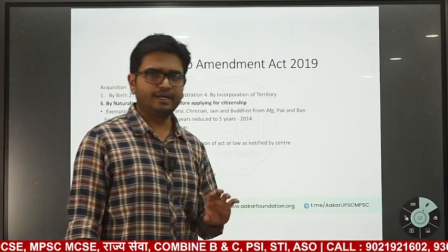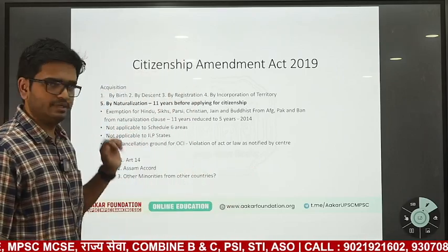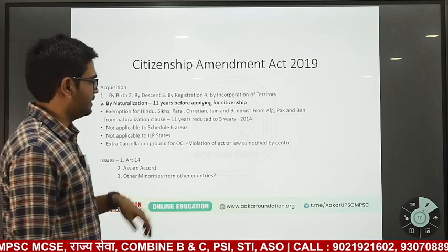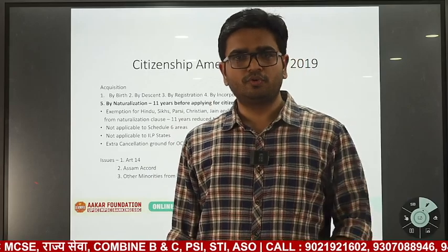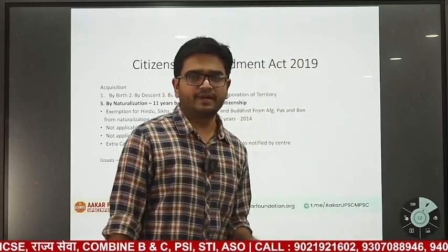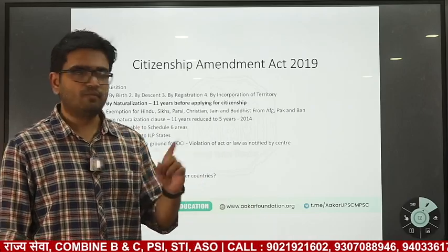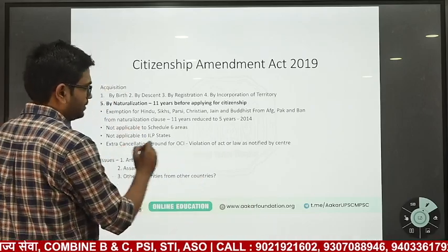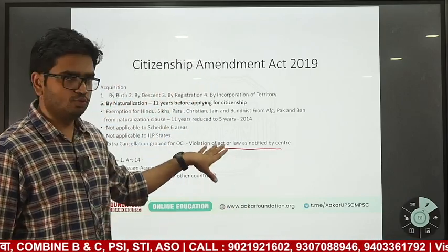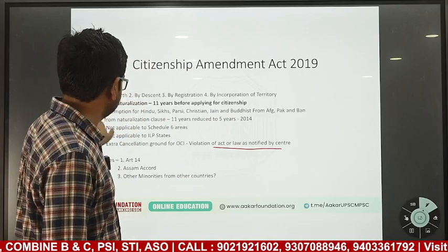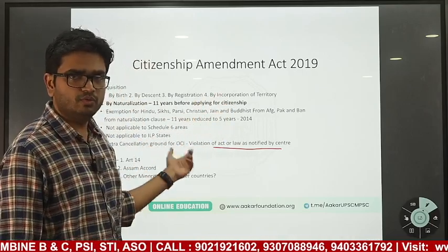So in Schedule Six areas of Assam, Meghalaya, Tripura, and Mizoram, and in ILP states of Arunachal Pradesh, Manipur, Nagaland, and Mizoram — these CAA immigrants cannot settle. Basically, most of northeast India is excluded from this act. One more provision in the act added an extra ground for cancellation of OCI cards: violation of a law as notified by the Centre.